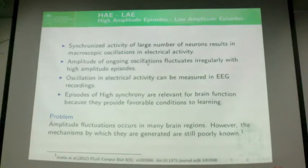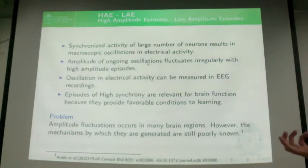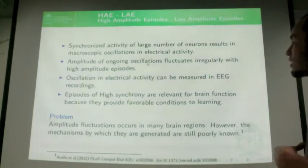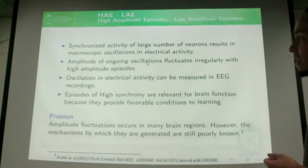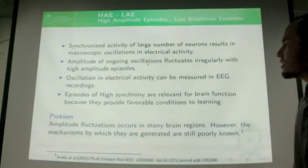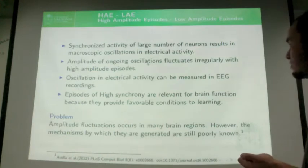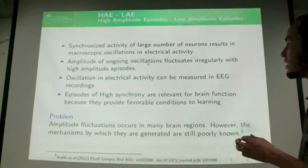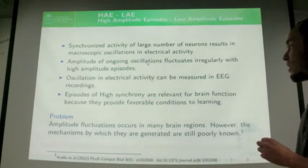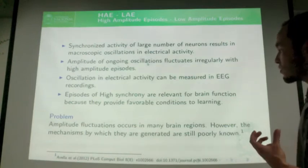First, we have that the synchronized activity of a large number of neurons results in macroscopic oscillations in electrical activity. Another feature is that the amplitude of ongoing oscillations varies irregularly, with high-amplitude episodes. The oscillations in electrical activity can be measured in EEG and recorded. The episodes of high synchrony are relevant for brain function because they provide favorable conditions for learning.